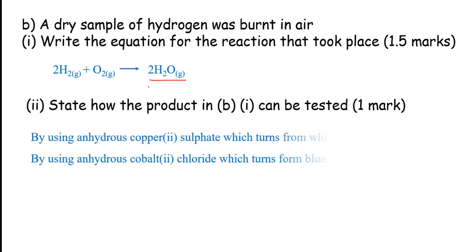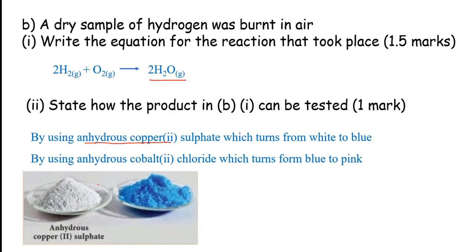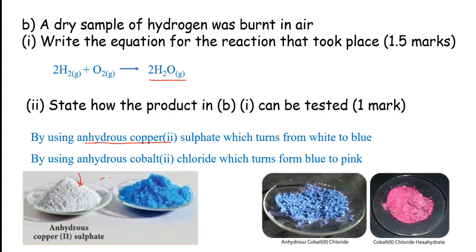We can use anhydrous copper 2 sulfate, which is usually white. And when you add water to it, it will become blue. By using anhydrous copper 2 sulfate, which turns from white to blue, that's one way of testing for our water.